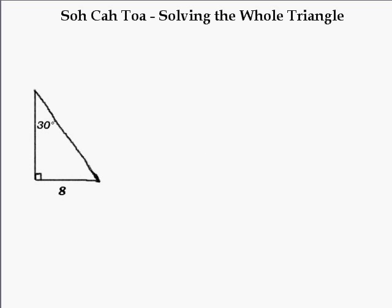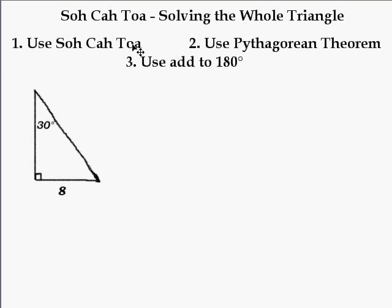Well, I do it like this. I use SOHCAHTOA, that's what I do first, and then I use Pythagorean Theorem and then I use add to 180 degrees. Now, I do it in this order and I teach it in this order because some of the students get confused when they add to 180 degrees first or when they use Pythagorean Theorem first.